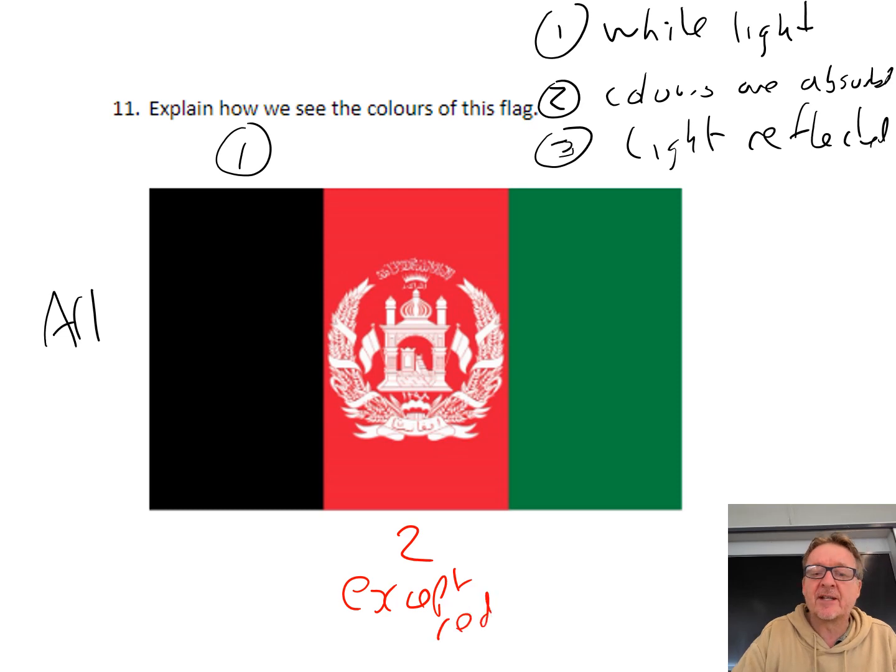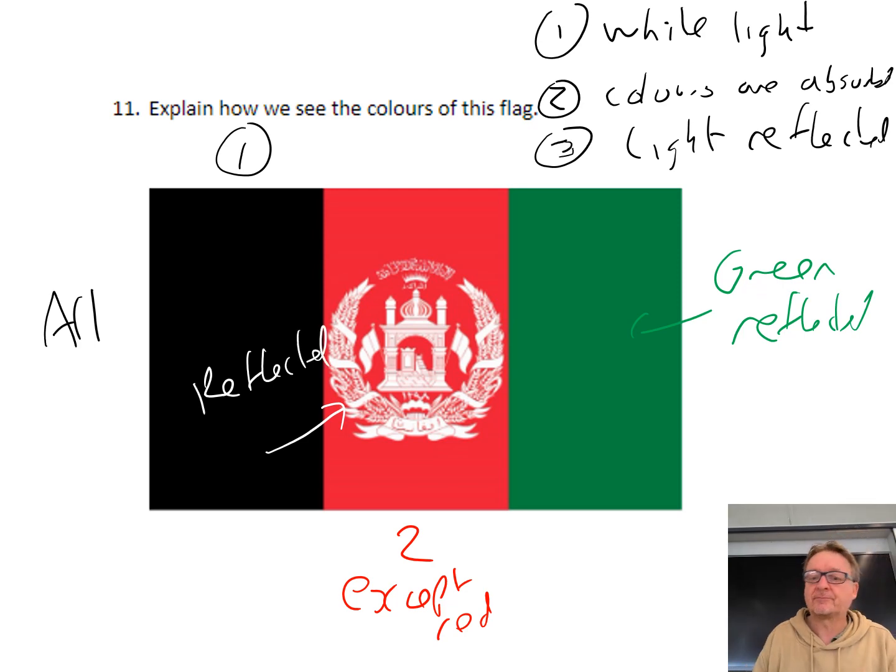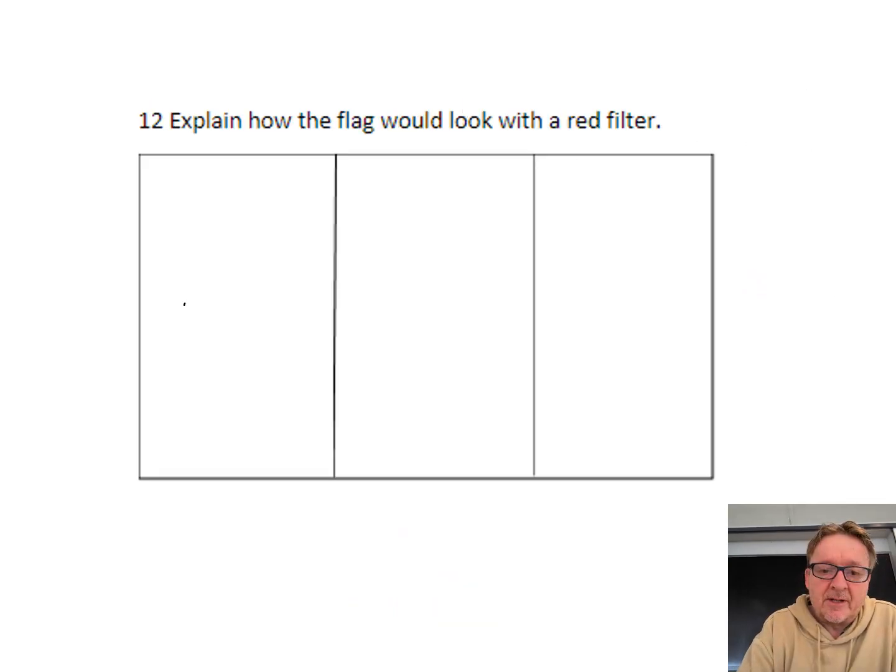Green, Richard of York gave battle in vain. Red, orange, yellow, green is reflected. So green reflected. And then in the middle here, the white. Red, orange, yellow, green, blue, indigo, violet all shine onto the white and they are all reflected. So that was black, that was red, and that was green.